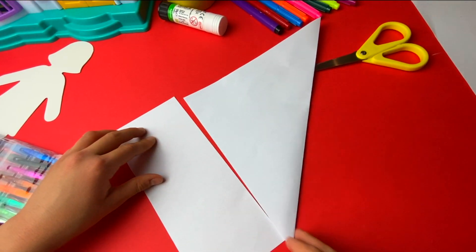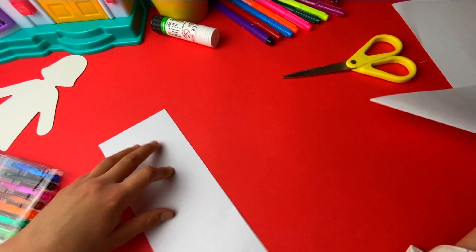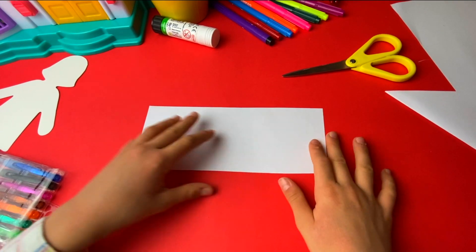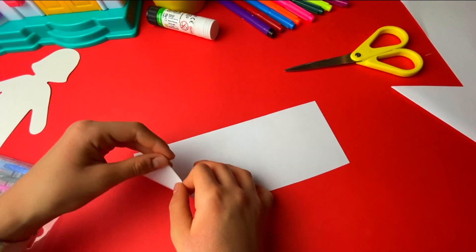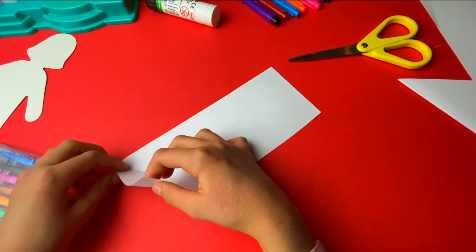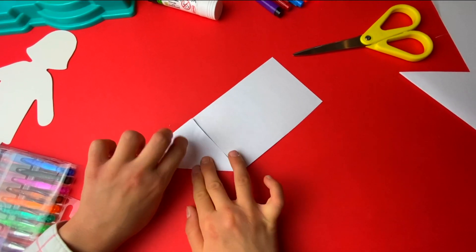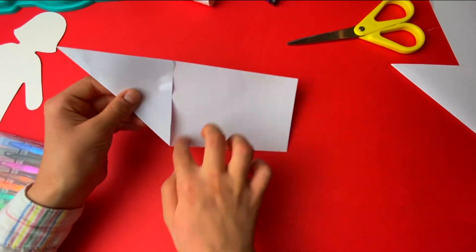So guys, I've cut this side, so we don't need this side for now, we need this side. So we get the corner and we fold it to the opposite side. And then we cut this side.